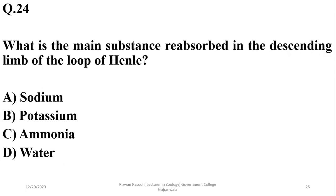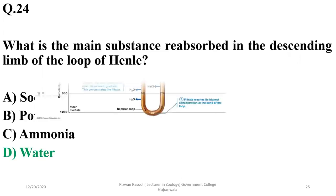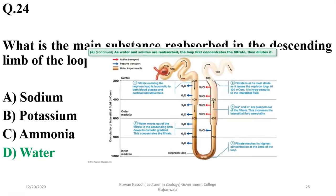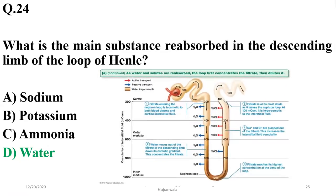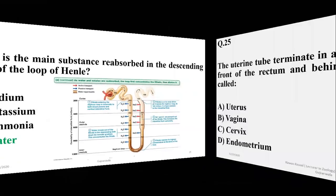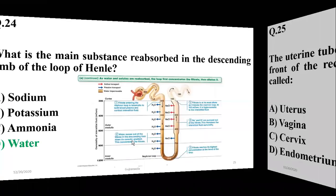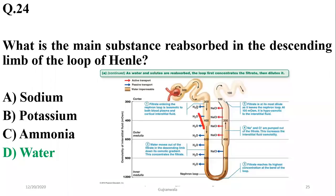Question 24: The main substance reabsorbed in the descending limb of the loop of Henle is water, which is mainly absorbed in the descending portion of the loop of Henle.